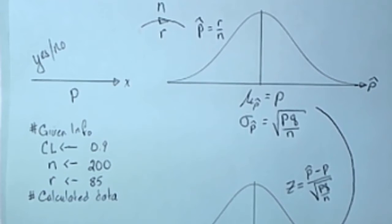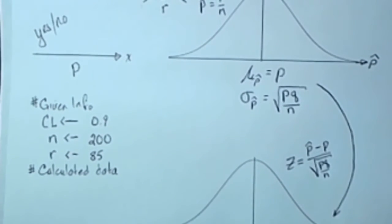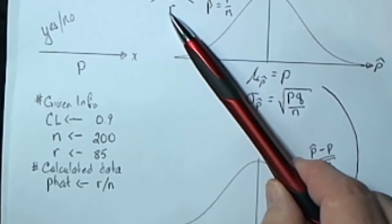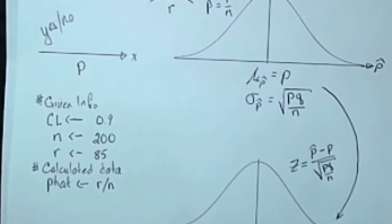From that information we can do some calculations. For example, P hat will be the number of successes in the sample divided by the size of the sample.